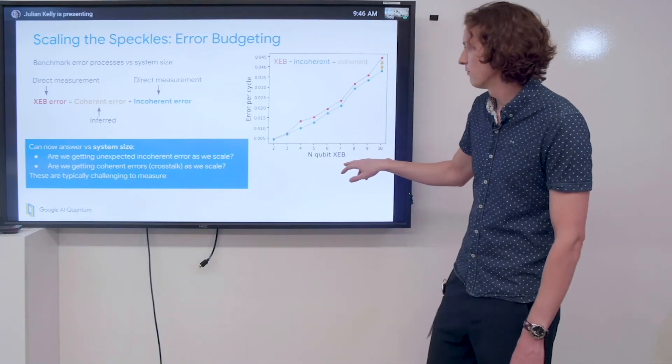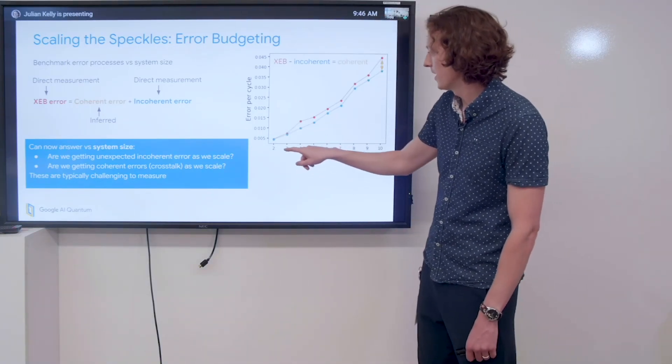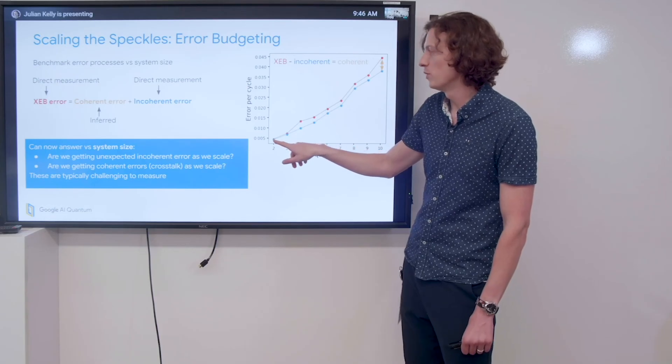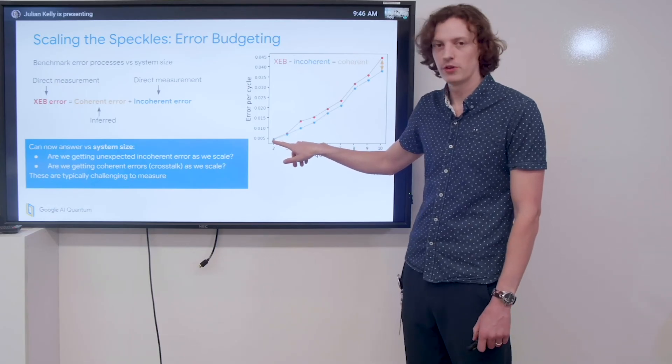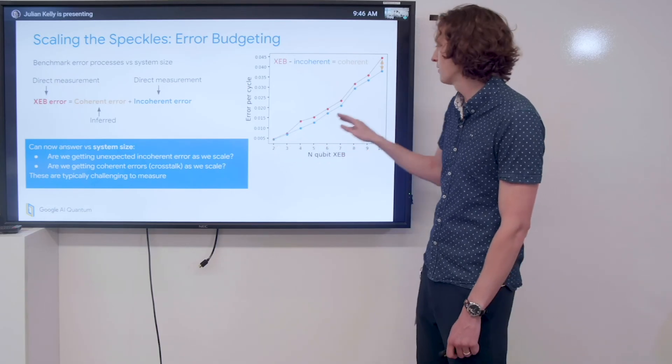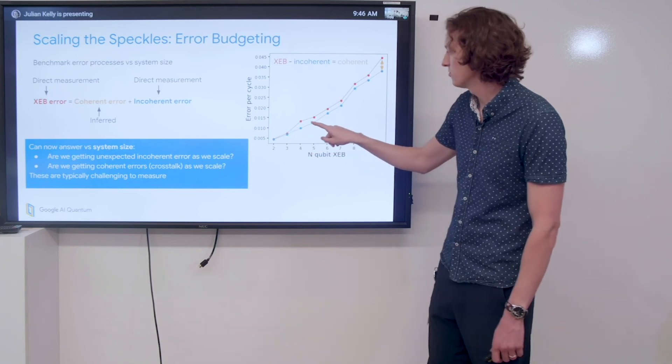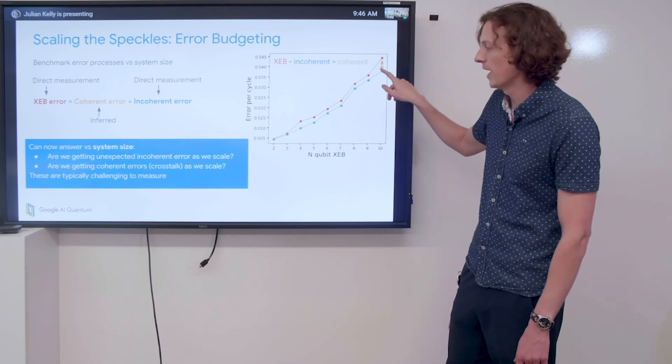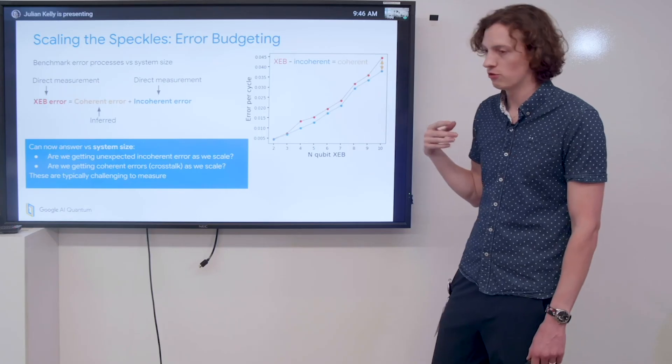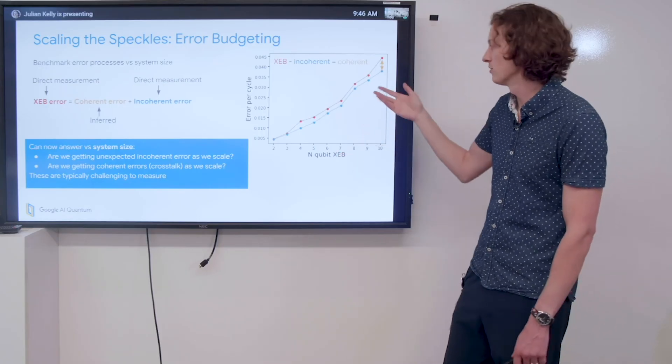If we look at, for example, the n-qubit XEB versus these error mechanisms, we can see that for a low number of qubits, we don't have much coherent error—we're doing a very good job with calibration. But as we scale the system size and add more qubits, we start to see just a little bit of coherent error being added. We'd expect that, for example, crosstalk effects to introduce something like this.